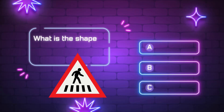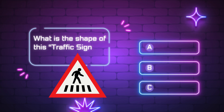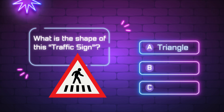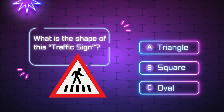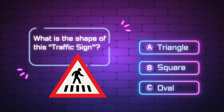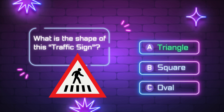What is the shape of this traffic sign? A, triangle. B, square. C, oval. Yes, it is a triangle.